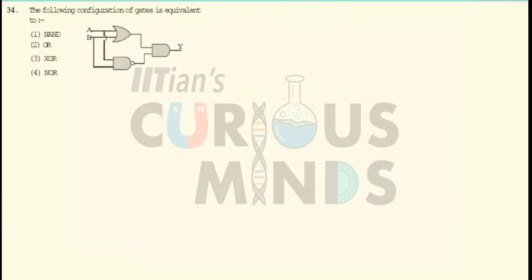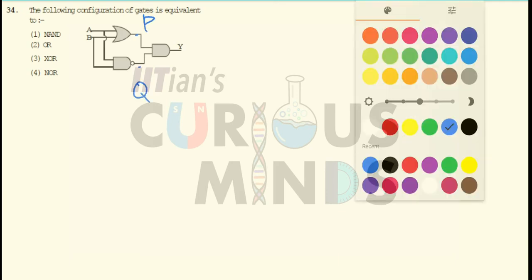The following configuration of the gates are equivalent to. Now A is, let me say that the output over here is equal to P, the output over here is equal to Q. Let me write down the truth table.